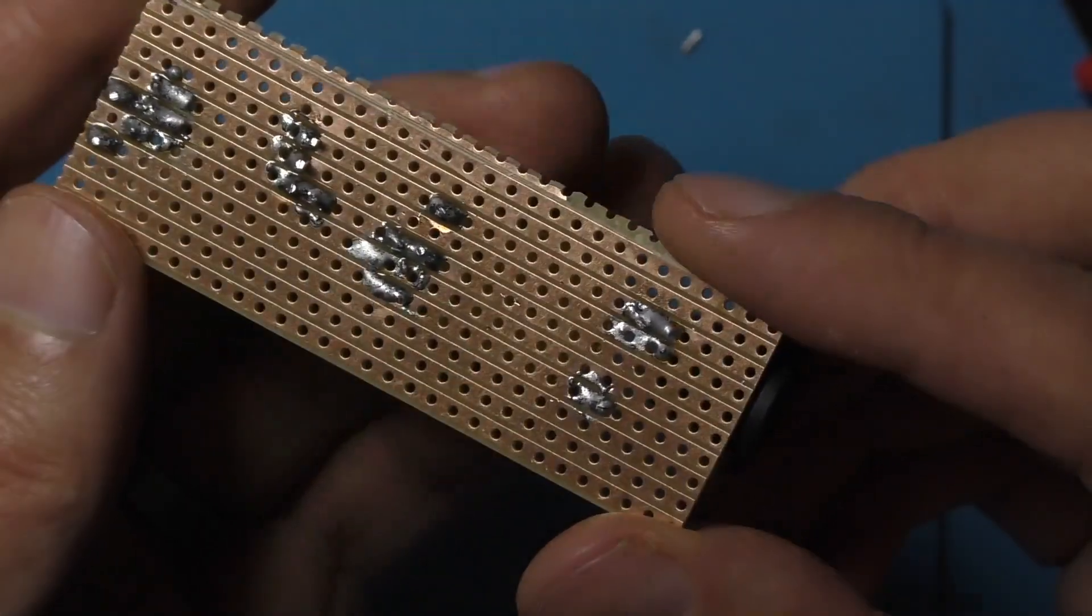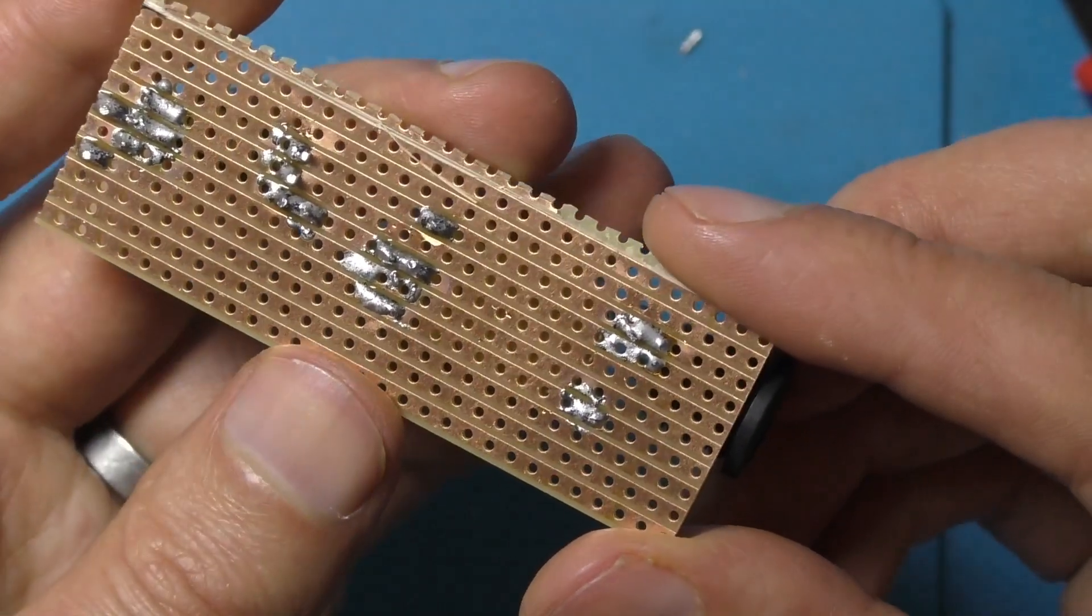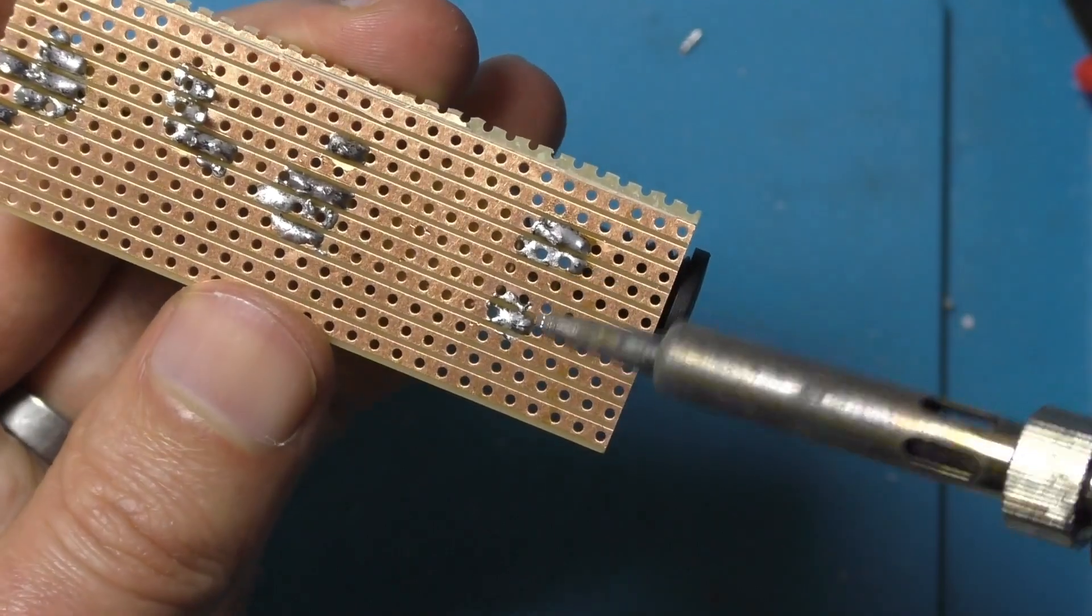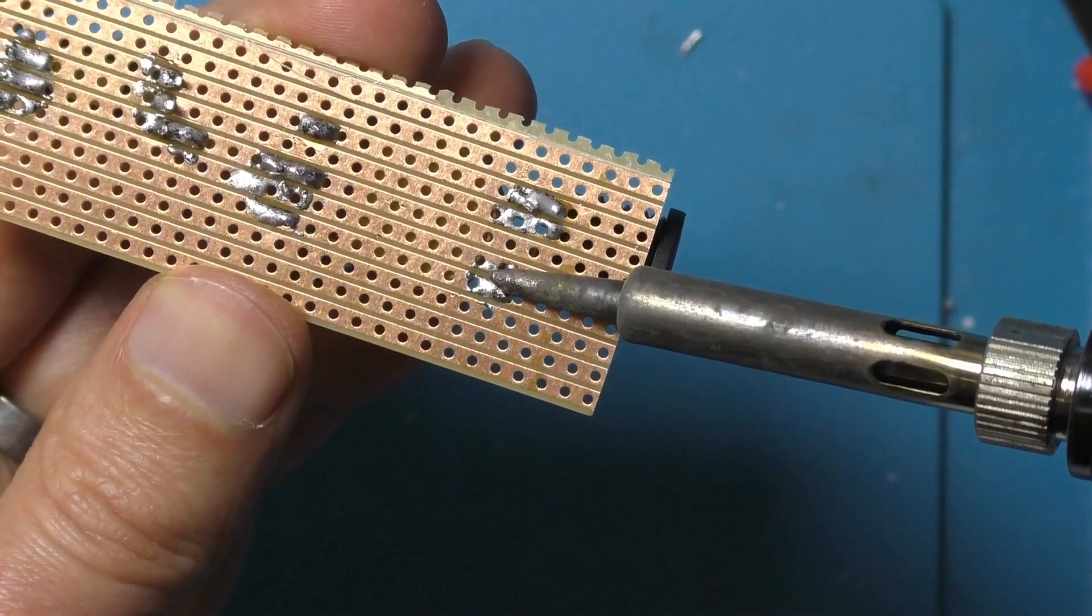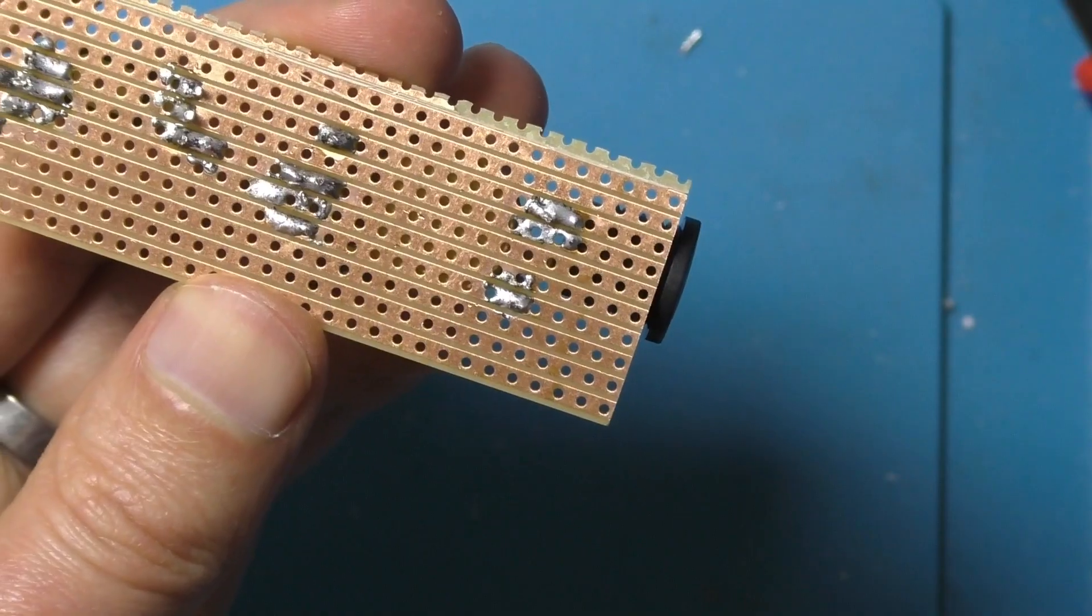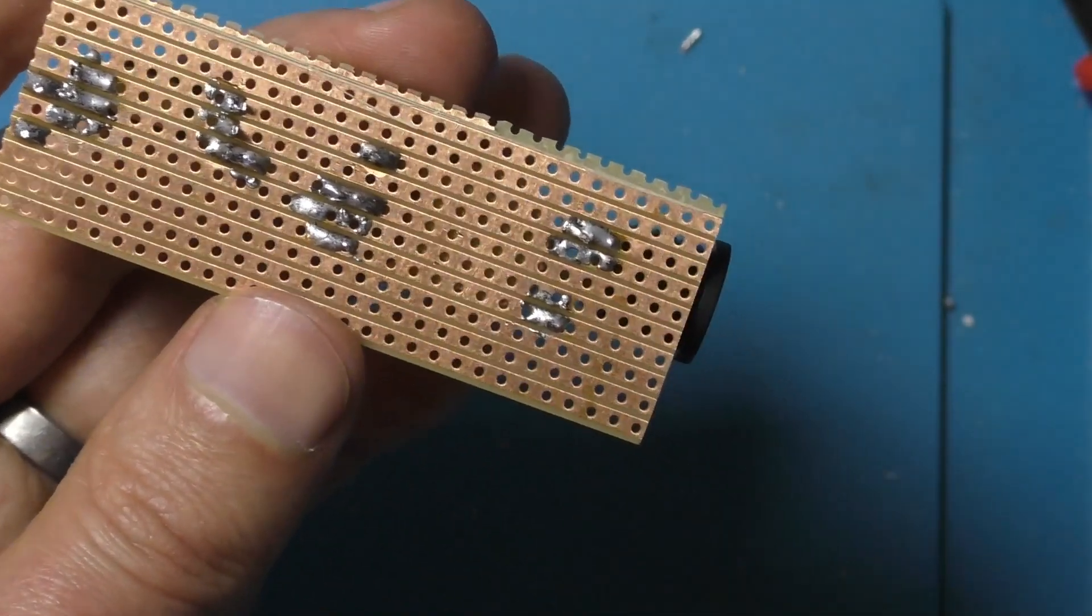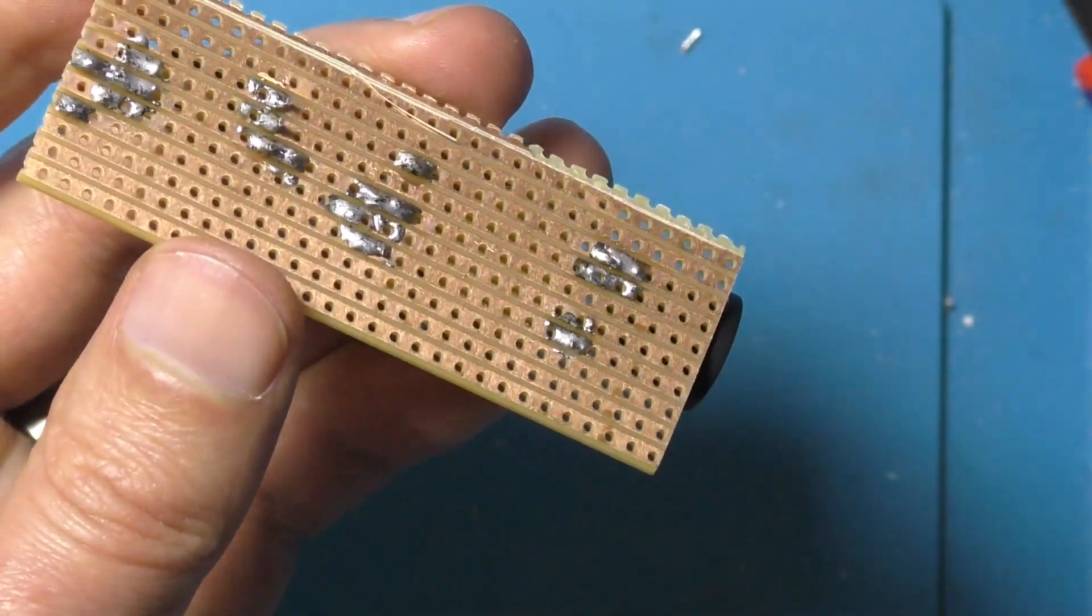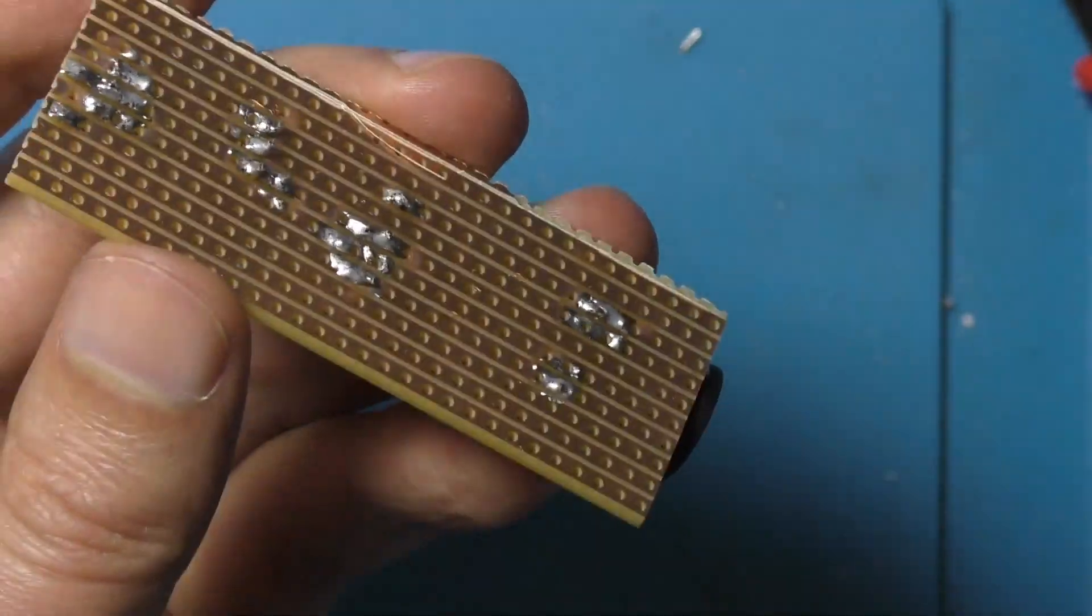I'm just inspecting the solder joints they're not particularly pretty but they look like they'll work. Just have to be careful that you haven't bridged any two strips of copper. Now there's a couple of places where I've got to make holes in the copper strip.